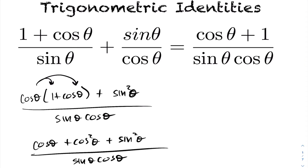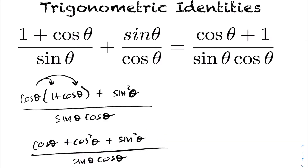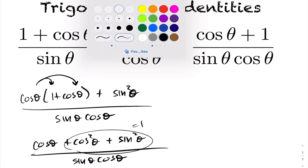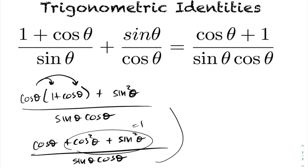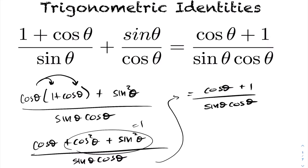Now that we have a common denominator, let's distribute cos theta into the brackets. Doing so, distributing cos theta into the one plus cos theta, we get cos theta plus cos squared theta plus sine squared theta. And as you know, cos squared theta plus sine squared theta equals one.